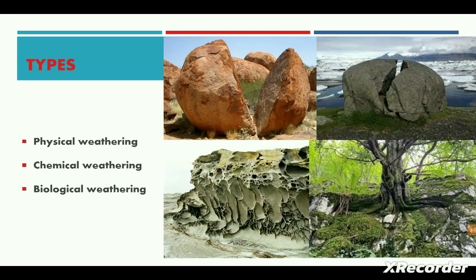Now let's look into the different types of weathering process. Weathering is the physical disintegration and chemical decomposition of rocks, and various elements — physical and chemical — contribute to weathering. In addition, plants, animals, and even humans are responsible for breaking rocks, which is termed biological weathering. Thus, weathering is of three major types: physical or mechanical weathering, chemical weathering, and biological weathering. It should be noted that all three types are intimately interrelated, making it very difficult to isolate one process from another.